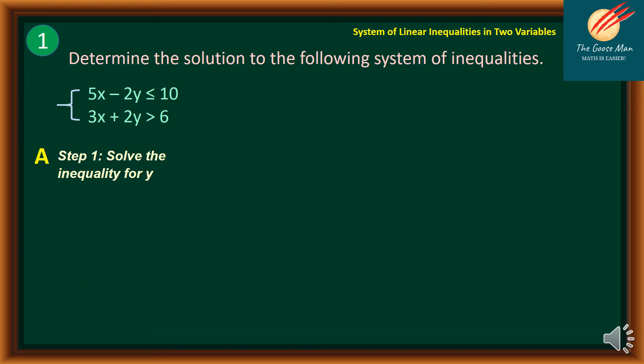Let's have example number one. Determine the solution to the following system of inequalities. We have 5x minus 2y is less than or equal to 10, and the other one is 3x plus 2y is greater than 6.